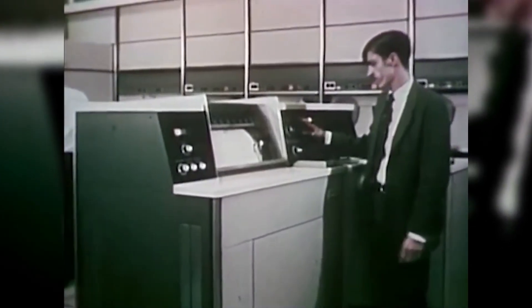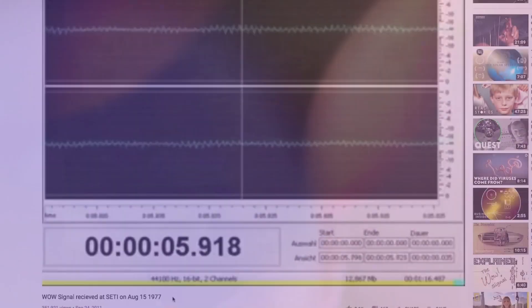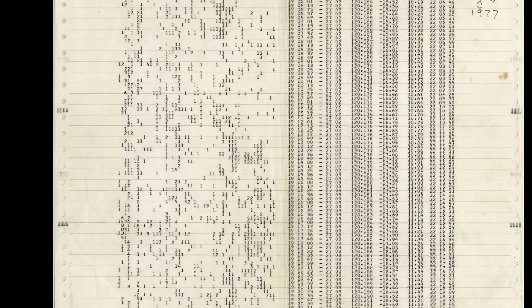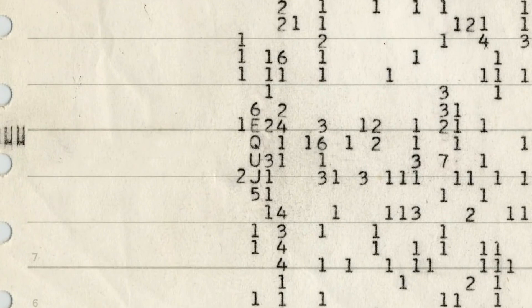Dr. Jerry R. Ehman, an astronomer actively involved in the SETI project, was analyzing data from the Big Ear telescope when he stumbled upon a powerful and focused signal that persisted for a precise duration of 72 seconds. Struck by the signal's nature, Dr. Ehman highlighted the data on the computer printout with 'Wow' in red ink.